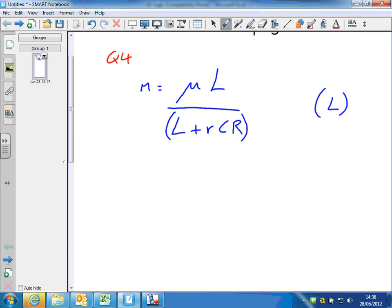So see if you can complete the question. At any point you can pause, look at the video, pause it, and then try and carry on. So multiplying both sides by that term underneath gets rid of it, and we have little m multiplied by that term equals mu L.